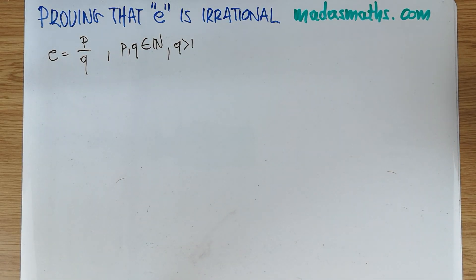p and q are in fact natural numbers with q bigger than one. So this is now the starting thing. We're going to prove that if this is the case, then we have a problem.